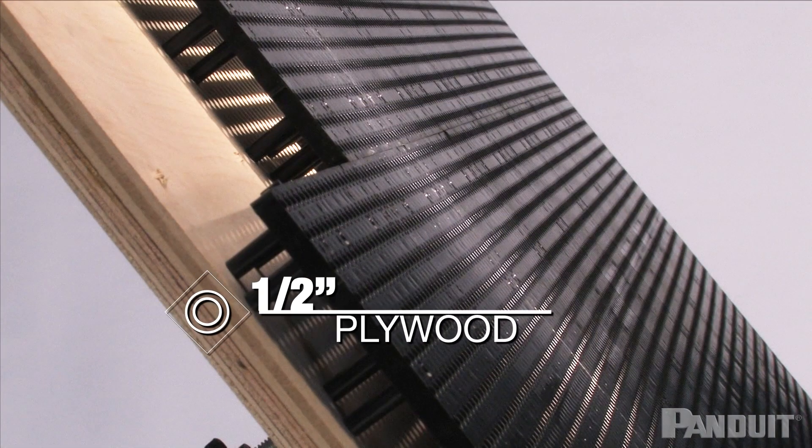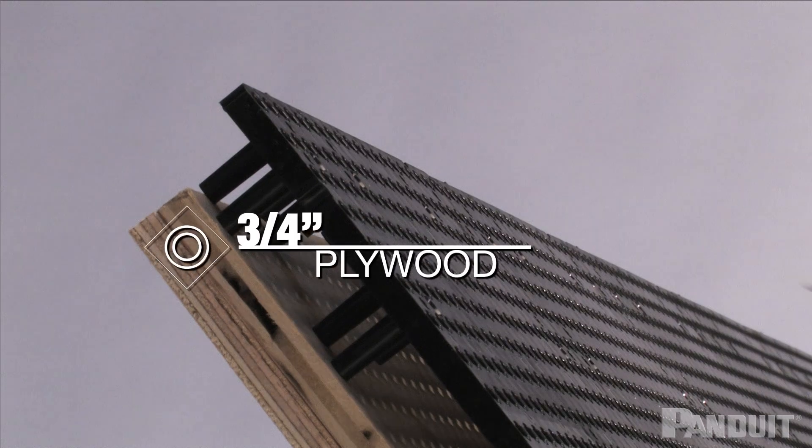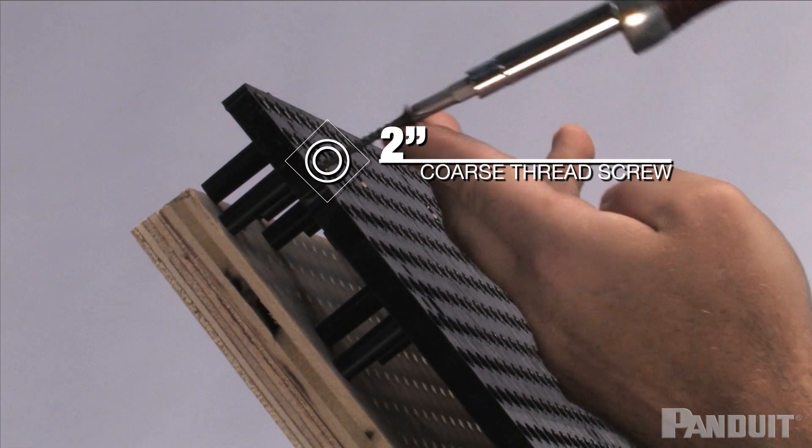If you are using one-half inch plywood, I might recommend securing the tiles to the plywood using one and three-quarter inch coarse thread screws. If you're using three-quarter inch plywood, I would recommend using two inch coarse thread screws.